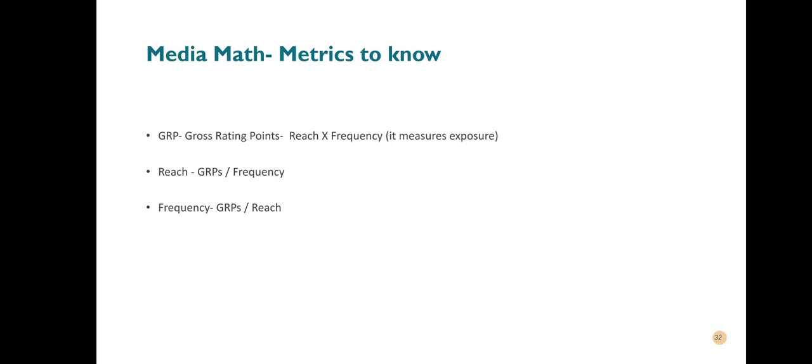Let's look at some media math metrics we need to know as media planners and buyers. The first is what we call the Gross Rating Points. Why would you need to know Gross Rating Points? You need to know them to have an idea of the size of the audience that is going to be reached by a particular media. So if it is television, you have to find out the Gross Rating Points of that television station.